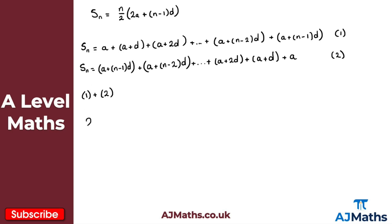Adding equations 1 and 2 gives 2 lots of Sn. The first pair is a plus a plus (n minus 1)d, giving 2a plus (n minus 1)d. For the next pair, a plus d plus a plus (n minus 2)d: we get 2a, and d plus (n minus 2)d gives (n minus 1)d. So each pair equals 2a plus (n minus 1)d. We've got n lots of those pairs.